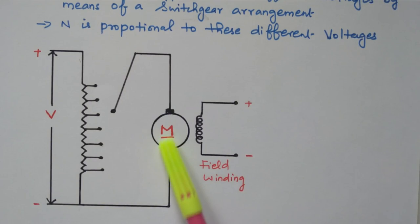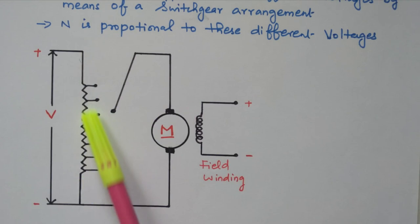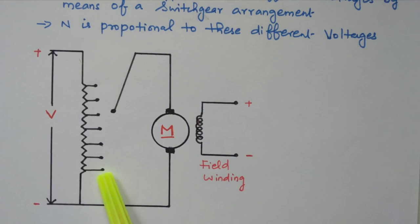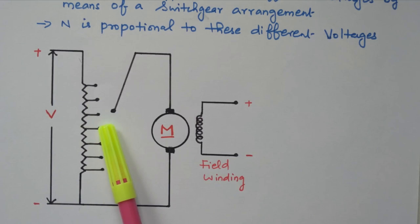Now refer the diagram. The armature rotating part and field winding are shown. Constant supply is given to the field winding with no variation. The voltage applied to the armature is varied by the switch gear. There are different voltage levels available. If connected at full voltage, the motor will rotate at maximum speed. If connected at a lower position, only a smaller voltage is applied and speed is less. By changing the switch position the voltage applied to the motor increases, so speed also increases. By varying the resistor value we can vary the voltage applied to the motor and thus vary the speed.